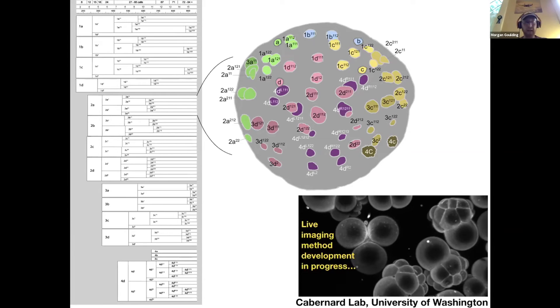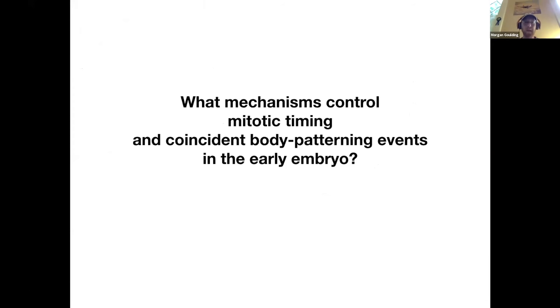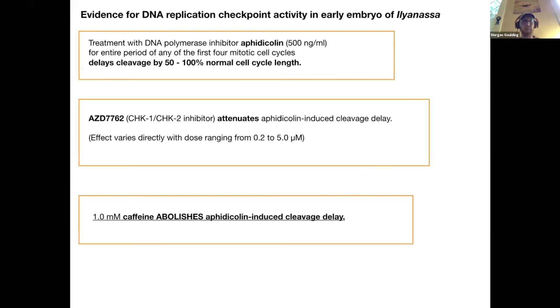I wouldn't wish the task of following the cell lineage on my worst enemy, but we're working on live imaging to make it easier. The basic question I want to talk about is what mechanisms control mitotic timing in the early embryo, coincident with really important body patterning events like polar lobe formation and micromere formation. The first thing I stumbled across by accident is that, unexpectedly, blocking DNA replication blocks cell division. It's not like frogs and fishes and flies where the early cleavages are like whatever, don't care about DNA replication, they will happen anyway.